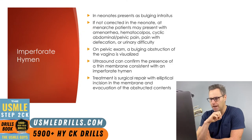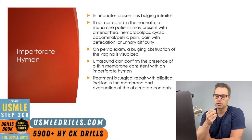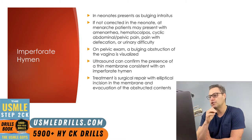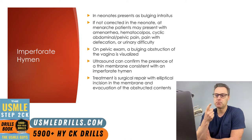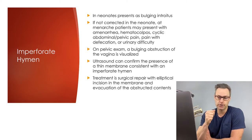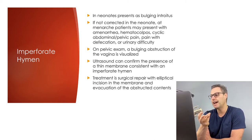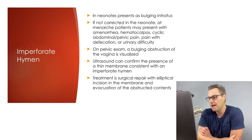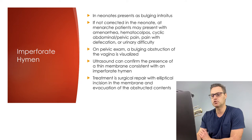Next is the imperforate hymen. It can first be identified at birth when there is a bulging introitus due to stimulation with maternal estradiol, causing a buildup of neonatal vaginal secretions behind the hymen. If not noted at birth, secretions are reabsorbed and the condition does not progress until menarche. At menarche, patients may present with amenorrhea, hematocolpos visualized as a bluish hymenal membrane, cyclic abdominal or pelvic pain, pain with defecation, and urinary difficulties. Treatment is surgical repair with elliptical incision and evacuation of obstructive contents.